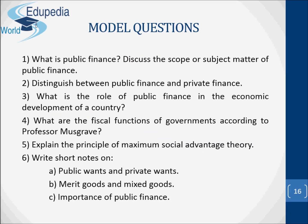Now let's look at the model questions. There are six questions: (1) What is public finance? Discuss the scope or subject matter of public finance. (2) Distinguish between public finance and private finance. (3) What is the role of public finance in the economic development of a country? (4) What are the fiscal functions of governments according to Professor Musgrave? (5) Explain the principle of maximum social advantage theory. (6) Write short notes on: (A) public wants and private wants, (B) merit goods and mixed goods, (C) the importance of public finance.